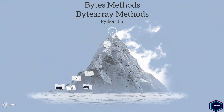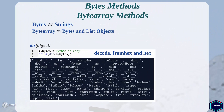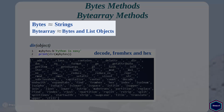Welcome to this tutorial on bytes and byte array methods. Bytes and byte array are two different built-in data types in Python, and like everything else in Python, they are also objects. Bytes objects are very similar to string objects, whereas byte array objects are like bytes objects but they are mutable objects like list objects.